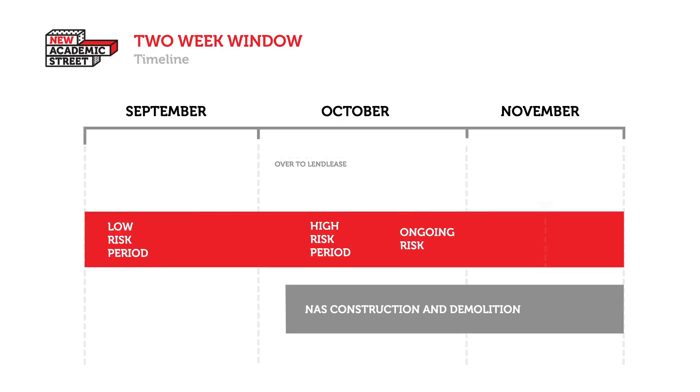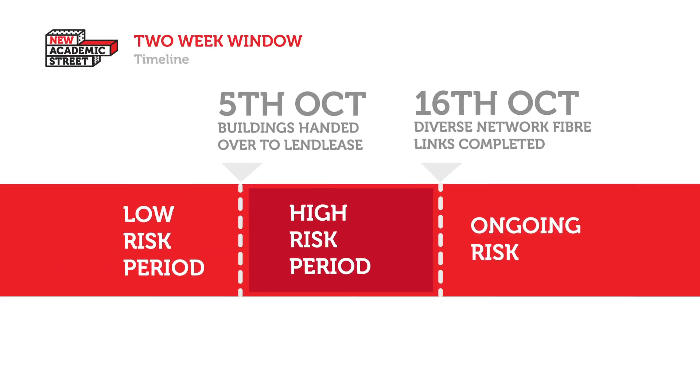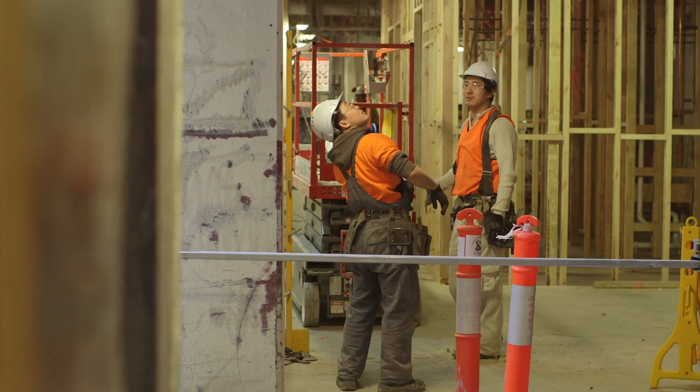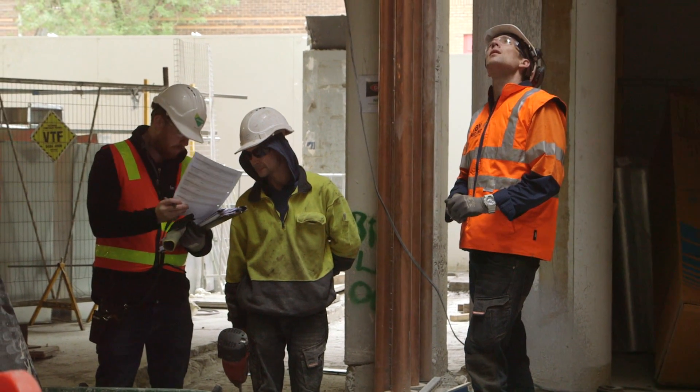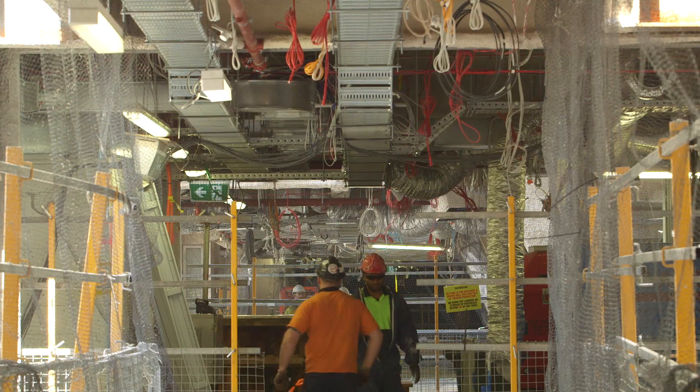There was a two-week window where the buildings would be handed over to Lend Lease and we wouldn't have the diverse network fibre cable finished. So the second control — the main control from a property and construction point of view — was putting in place very careful risk-based protocols, which included lots of signage and people shadowing subcontractors just to make sure that for that two-week period they never went close to or did anything that would potentially impact those precious cables. Until that was all put in place, authority wasn't given to go ahead. Once it was, the project sponsor gave authority to hand over the buildings.